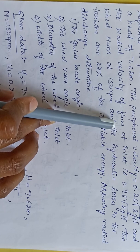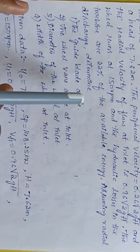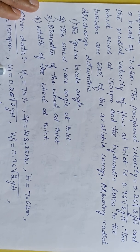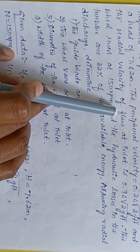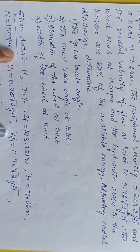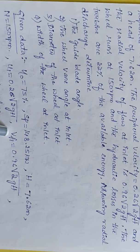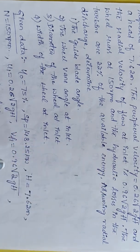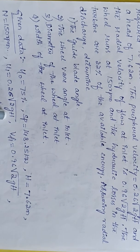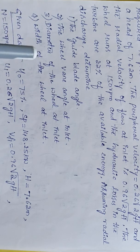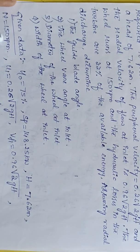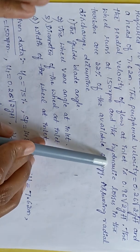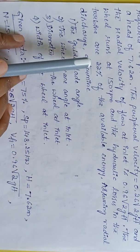The peripheral velocity, also called wheel velocity u1, is given by the formula 0.26 times the square root of 2gH. The velocity of flow at inlet Vf1 is given by 0.96 times the square root of 2gH, where H is 7.62 meters. The speed of the turbine N is 150 rpm.